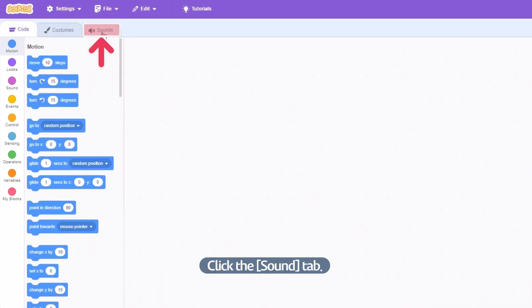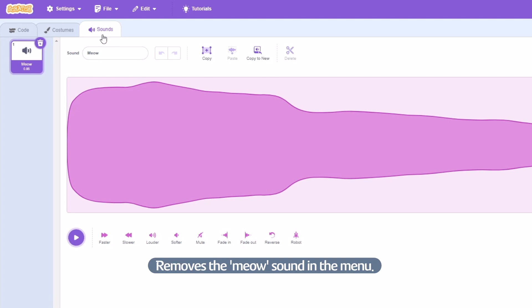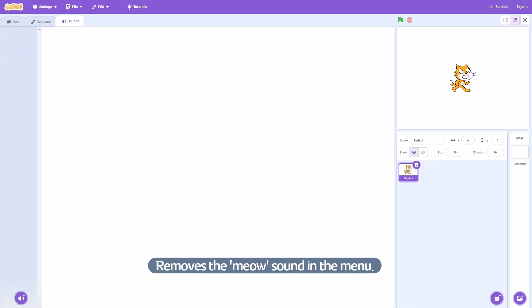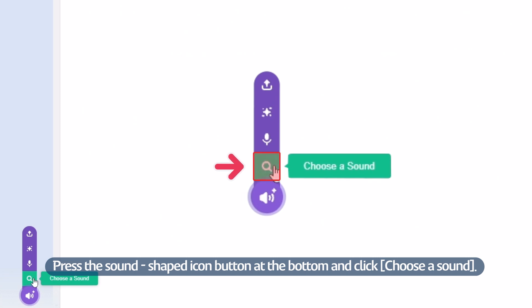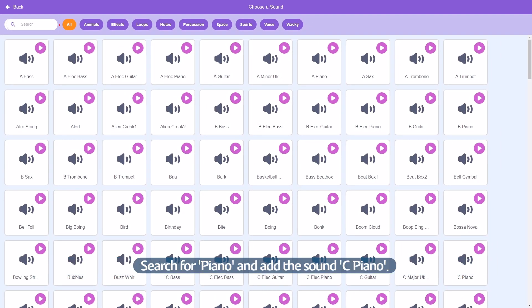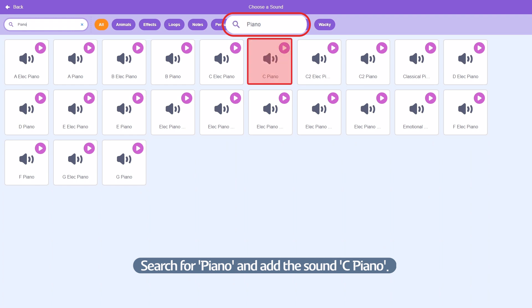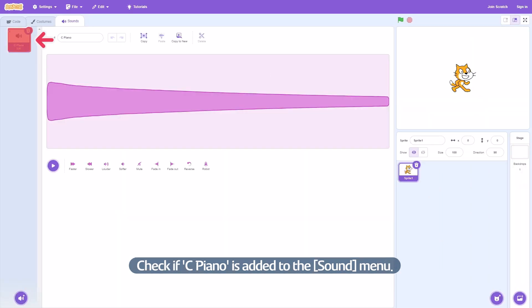Click the Sound tab. Remove the Meow sound in the menu. Press the Sound Shape icon button at the bottom and click Choose a Sound. Search for piano and add the sound C Piano. Check if C Piano is added to the Sound menu.